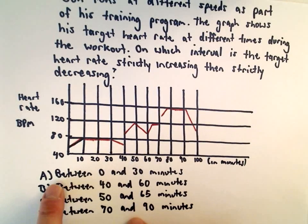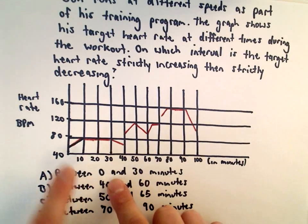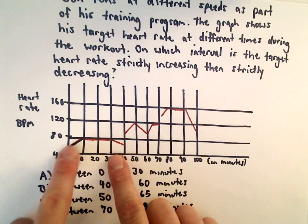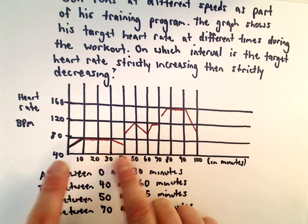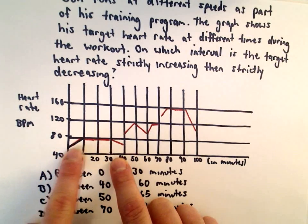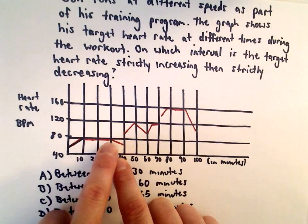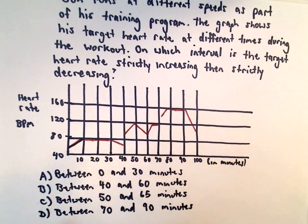Part A says between 0 and 30 minutes, so we're looking at this little section of the graph right here. Well, at 0 minutes his heart rate is increasing, but then it stays constant from 10 minutes to 30 minutes. So answer choice A wouldn't be correct.